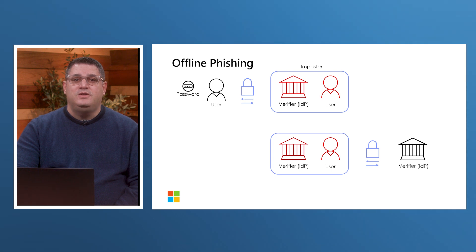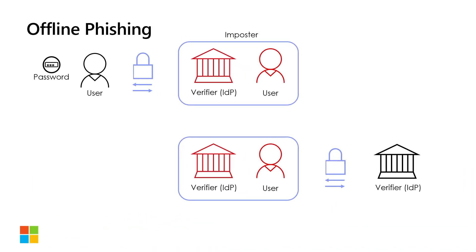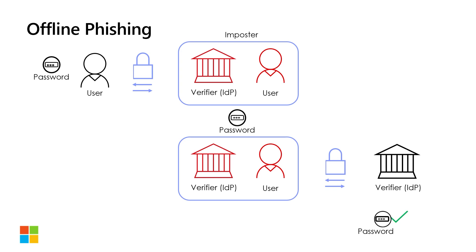Let's look at a simple phishing attack where the authentication method used is a password. The unwary user most likely received an email with a link to an imposter site or downloaded some malware leading to an imposter site. To the eyes of our unwary user, the site looks legitimate and a request to authenticate with username and password doesn't raise any suspicion. Our user enters the username and password, gets into the site, browses for a while, and eventually signs out as a good security habit. The imposter is now in possession of the user's credentials, allowing the imposter later to impersonate the legitimate user and successfully authenticate to the legitimate site as the legitimate user.